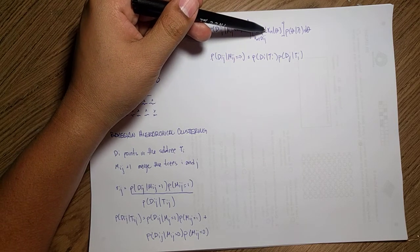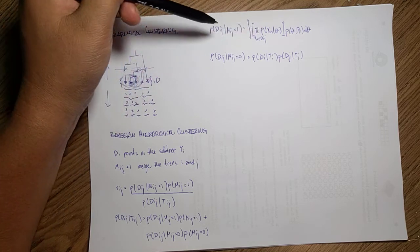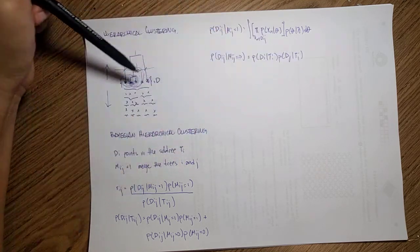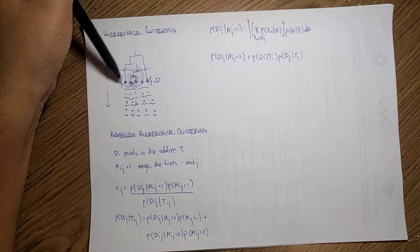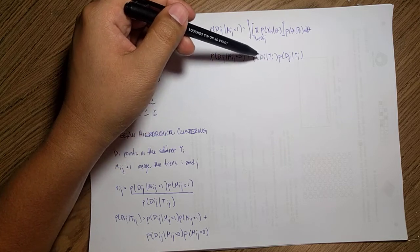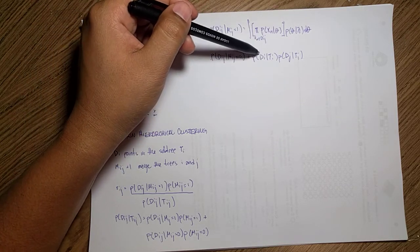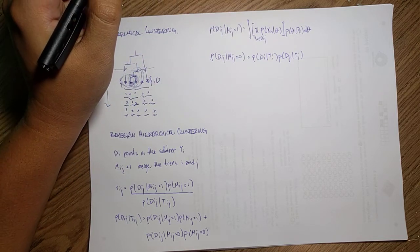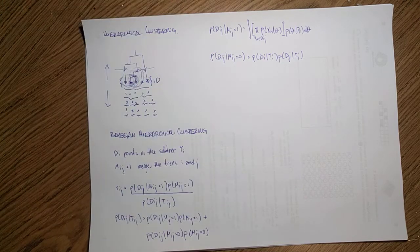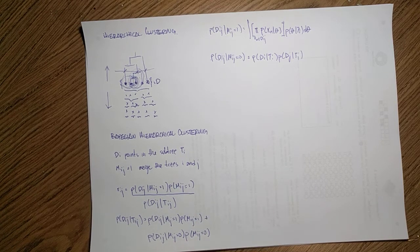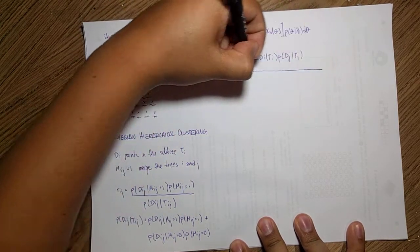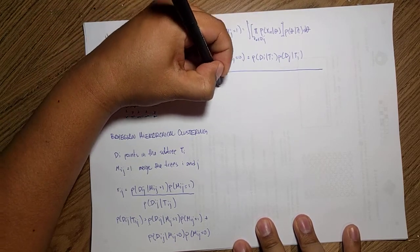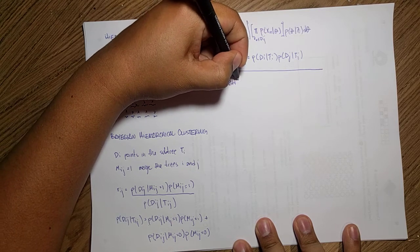Since we construct this bottom-up, we already have access to P(x_n) for each point as we build up, so we can simply compute the likelihood using the thetas we find. Now we have a nice way to find these values, but we still need particular priors. Going back to the Dirichlet process, we can think about how to merge the Dirichlet process with our Bayesian hierarchical clustering.